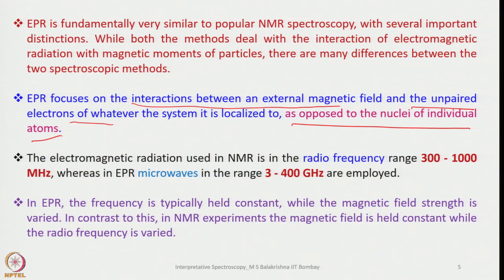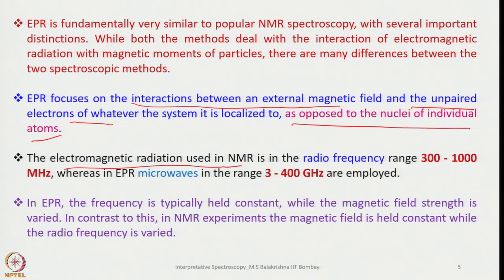In NMR spectroscopy we look into nuclear spin transitions, whereas in EPR we look into electron spin transitions — that is the major difference. The electromagnetic radiation used in NMR is in the radio frequency range of 300 to 1000 megahertz, applied perpendicular to the applied magnetic field to bring about flipping or transition of a nucleus.